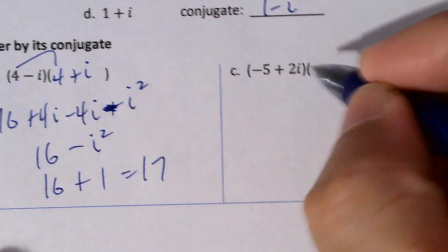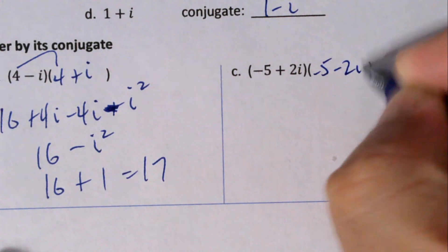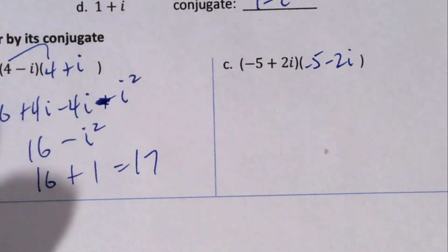Same again here: -5 + 2i, so it's -5 - 2i. I'm going to do a real quick shortcut here. So this only works when you multiply with the conjugate. I'm going to teach you a shortcut that only works when you multiply with the conjugate.